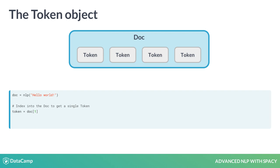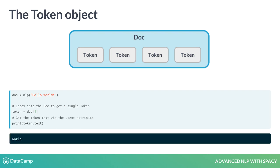Token objects also provide various attributes that let you access more information about the tokens. For example, the .text attribute returns the verbatim token text.